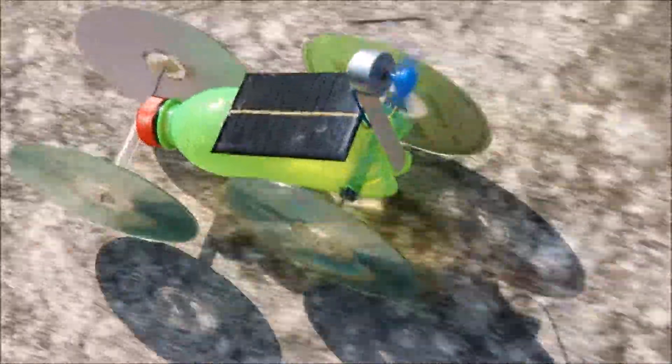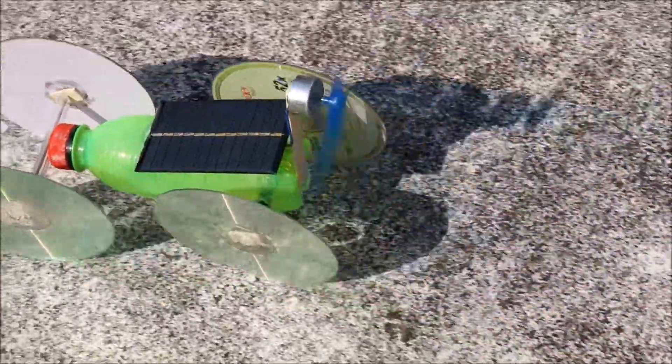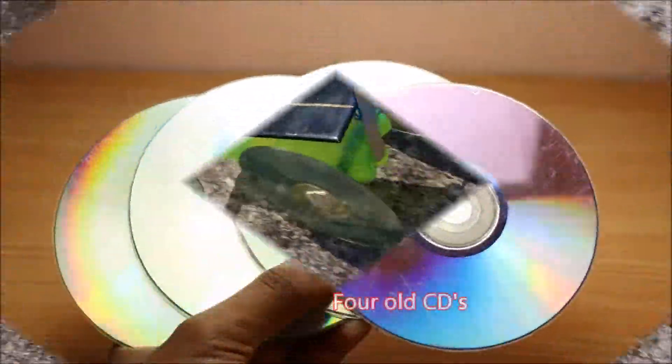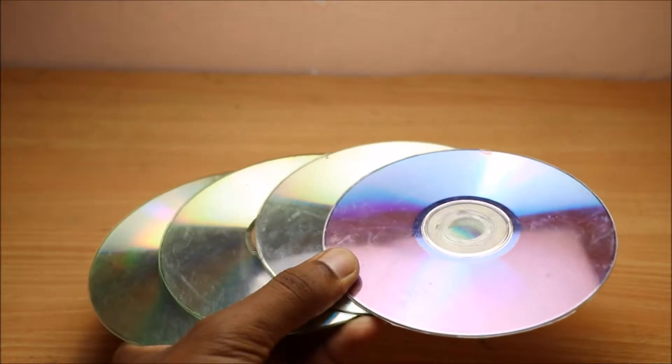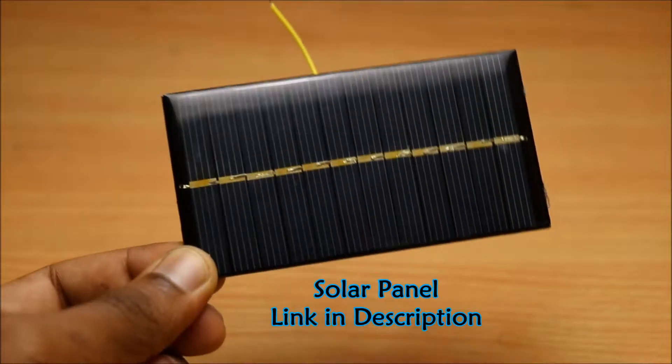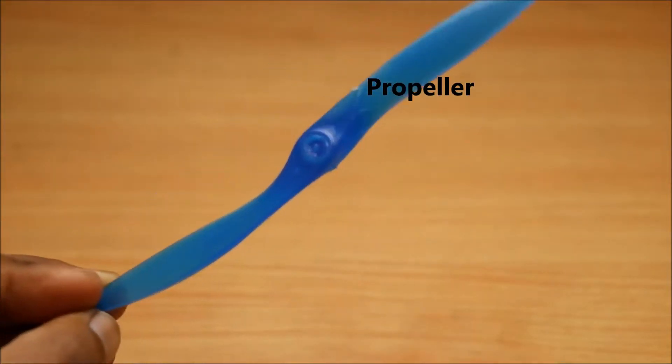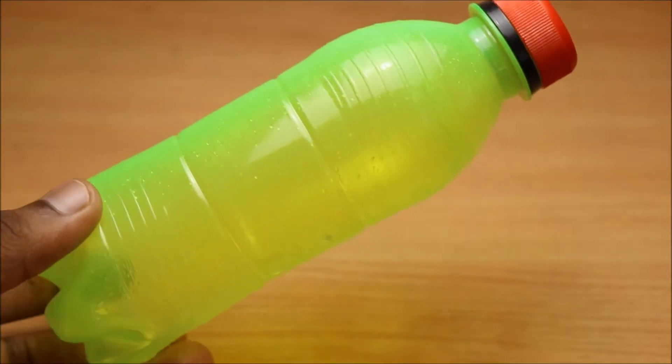Hello friends, in this video I will be showing you how to make a solar powered air car. For that, you need four old CDs, a solar panel, a DC motor, a propeller blade, and a water bottle.